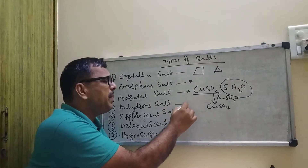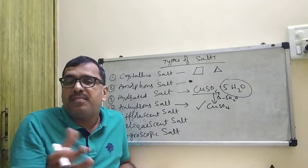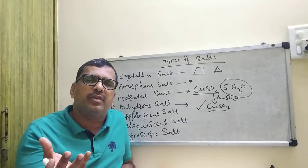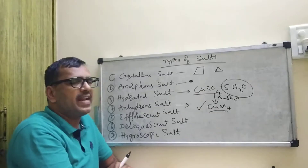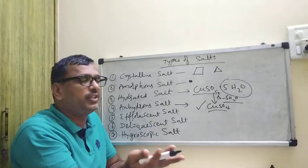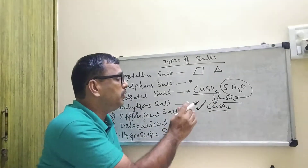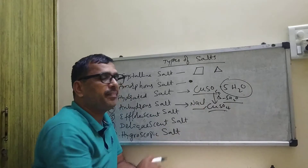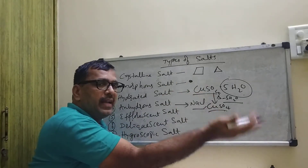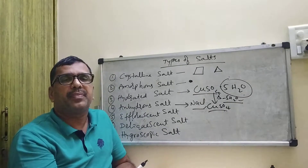What do you mean by anhydrous? Anhydrous means without water molecules. CuSO4 — there is no water molecule — so we call it anhydrous. A hydrated salt, by losing its water of crystallization, changes into an anhydrous salt. Anhydrous may or may not have been hydrated — for example, NaCl is an anhydrous salt. So a hydrated salt, by donating its water of crystallization, is converted into anhydrous copper sulfate or anhydrous sodium chloride.